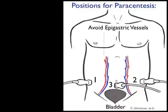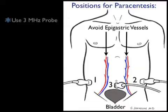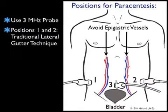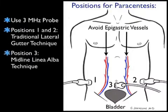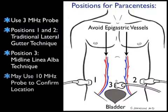This illustration shows the preferred positions for the paracentesis procedure. The key concept here is to avoid the epigastric vessels during the puncture attempt. Note the location of the epigastric vessels just lateral to midline on the abdominal wall. We want to use that 3 MHz probe, and we can place the probe in positions one and two in the traditional lateral gutter approaches for the paracentesis procedure.